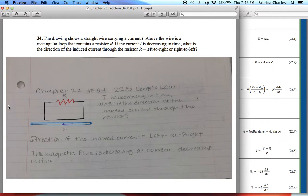Knowing that, we can proceed with the problem. The drawing shows a straight wire carrying a current I. Above the wire is a rectangular loop that contains a resistor R. If the current I is decreasing in time, what is the direction of the induced current through the resistor R? Left to right or right to left?